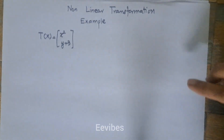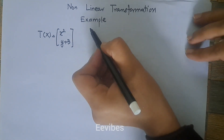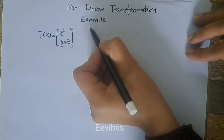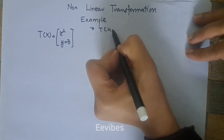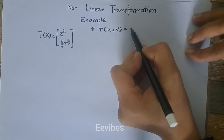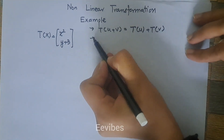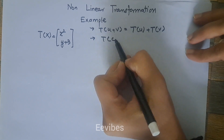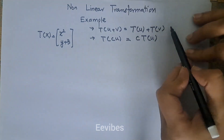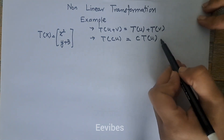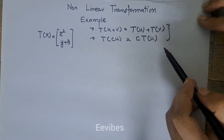Let's check whether this given transformation is linear or not. According to the linear transformation rule, two properties must be satisfied. The first property says T(u + v) = T(u) + T(v) for any two vectors. The second property says T(c·u) = c·T(u). This is called the additivity property and the scalar multiplication property, and both must hold for a linear transformation.